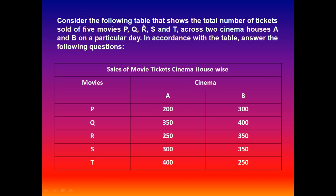Consider the following table that shows the total number of tickets sold of five movies — P, Q, R, S, and T — across two cinema houses A and B on a particular day. This table contains sale of movie tickets cinema house-wise. Movie P contains 200 and 300, movie Q contains 350 and 400, movie R contains 250 and 350, movie S contains 300 and 350.